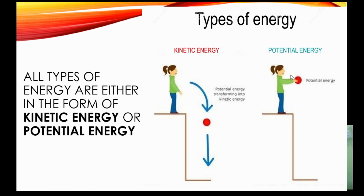Potential energy is the energy stored in an object due to its condition or position. Before a ball is thrown and when it is held at a height, the gravitational pull of the earth on that ball causes it to store potential energy. This is why you do not get hurt jumping from smaller heights, but you can easily break a bone jumping from a much greater height — because your body possesses much more potential energy due to its position.